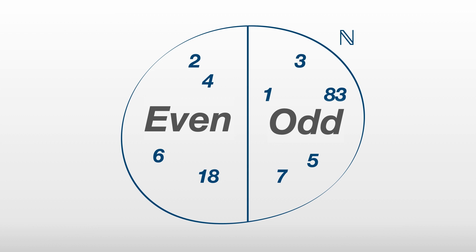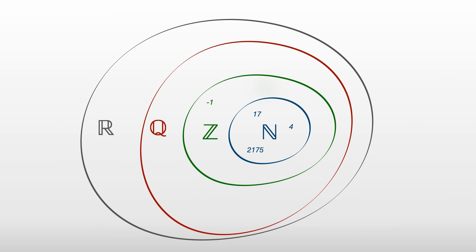We can also partition the set of natural numbers into subsets representing categories of numbers which share specific properties. For example, the even numbers and the odd numbers are both subsets of the natural numbers. The natural numbers themselves are a subset within a whole ecosystem of sets of numbers. And for the rest of this video, we'll look in detail at the various kinds of numbers shown here.